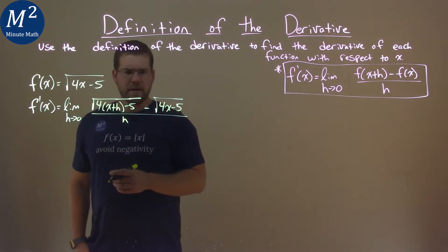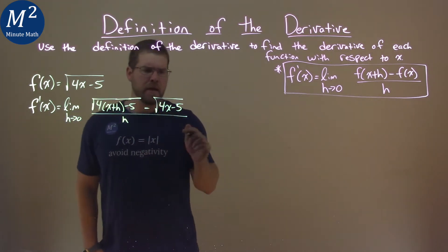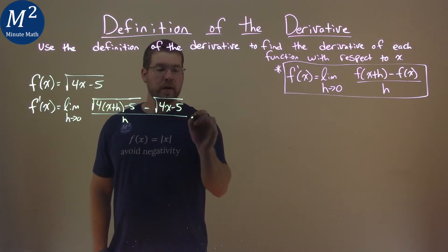Okay. Well, from here, this is a technique. I have an h in the denominator, and I don't really like that. So, I'm going to multiply this by the numerator's conjugate.